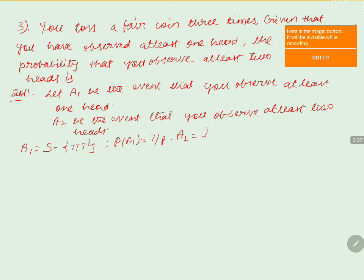A2 consists of the outcomes: HTT, THH, HTH, and HHH. So P(A2) = 4/8, which simplifies to 1/2.